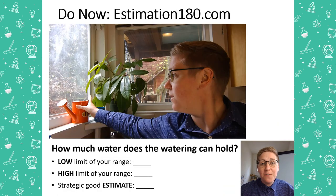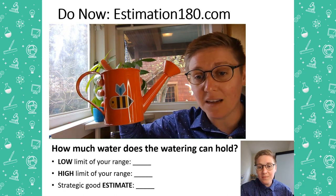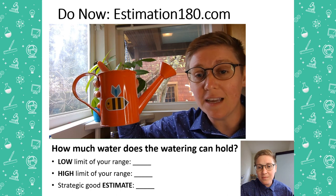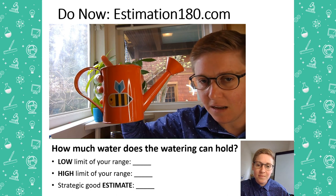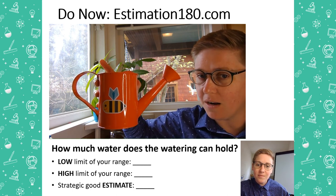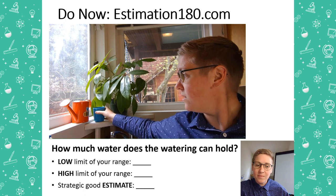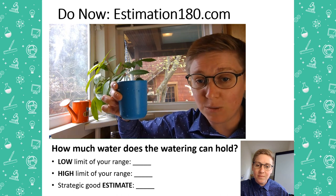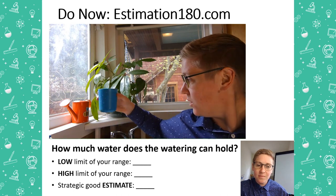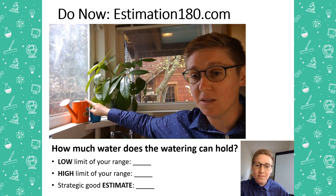For our do now today, we're going to take a look at a video I made of something I could estimate around my house. If you take a look at this watering can here, I want you to figure out what is the capacity of this watering can — how much volume of water does it hold? There's a cylinder for the main can and a little spout at the end. The water is right up to the edge of that spout. Comparing it to this blue cup, which holds 8 ounces or 1 cup of water — how many cups do you think this watering can holds?